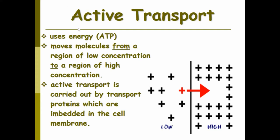Active transport requires energy — ATP, adenosine triphosphate. You move molecules from a region of low concentration to a region of high concentration. Normally, high concentration moves to low concentration to reach equilibrium. Active transport is carried out by transport proteins, which are in the cell membrane.